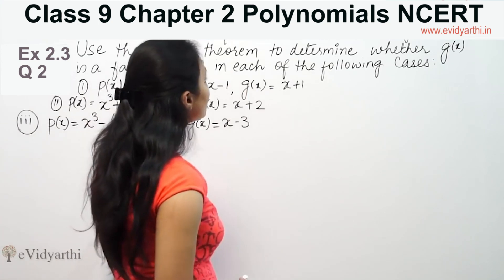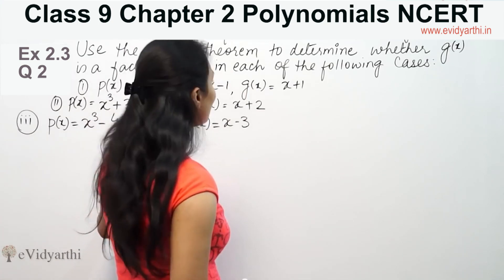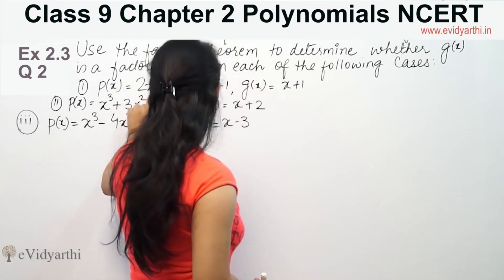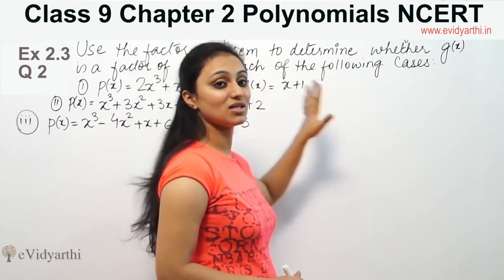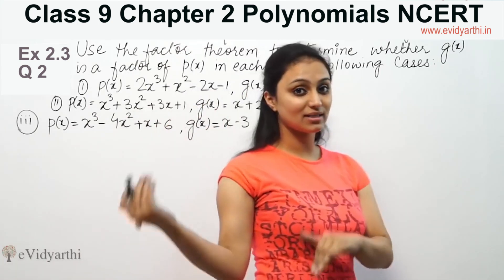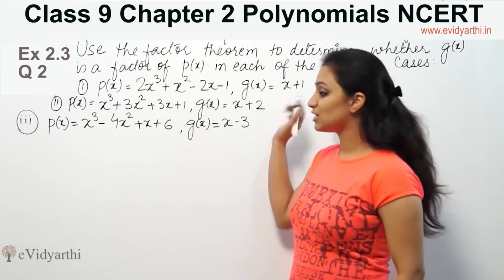This says use the factor theorem to determine whether g(x) is a factor of p(x) in each of the following cases. We have p(x) given here, 2x³ + x² - 2x - 1. This is p(x) and this is g(x). We will check that g(x) is a factor of p(x). So we will find it first.